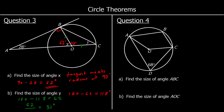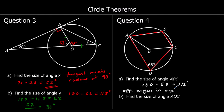Question 4: find the size of angle ABC. We've got a cyclic quadrilateral — a four-sided shape inside a circle. Opposite angles in a cyclic quadrilateral add up to 180 degrees. ABC is opposite 68 degrees, so 180 − 68 = 112 degrees. The reason is: opposite angles in a cyclic quadrilateral add to 180 degrees.